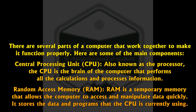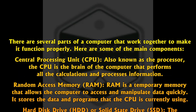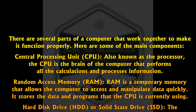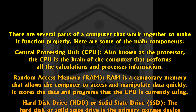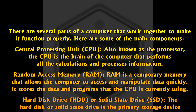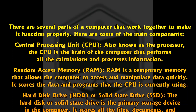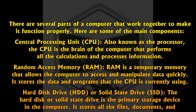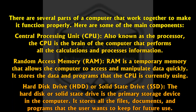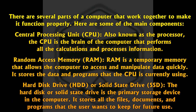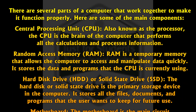There are several parts of a computer that work together to make it function properly. Here are some of the main components. Central Processing Unit (CPU): also known as the processor, the CPU is the brain of the computer that performs all the calculations and processes information. Random Access Memory (RAM) is a temporary memory that allows the computer to access and manipulate data quickly. It stores the data and programs that the CPU is currently using.